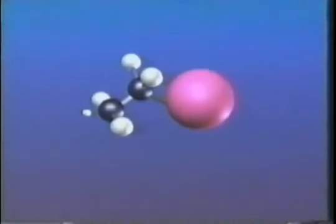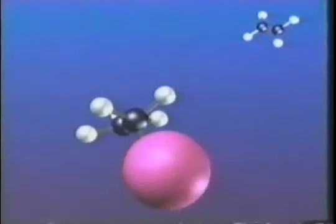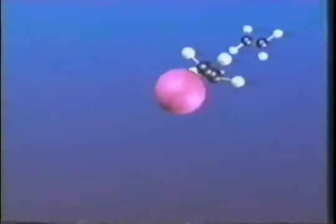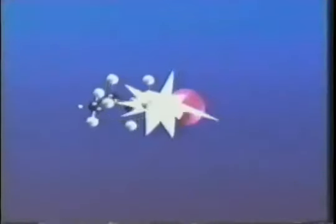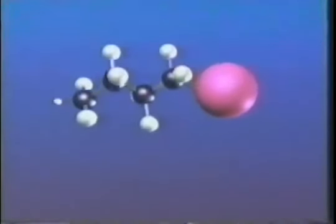Now, this new species, with its unpaired electron in turn, hunts down another electron to pair up with, finding it in the pi bond of yet another ethylene molecule. Contact. A larger new radical with a free electron.